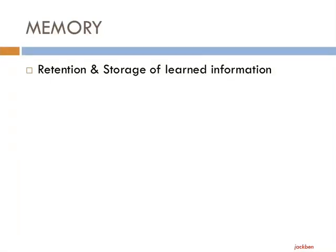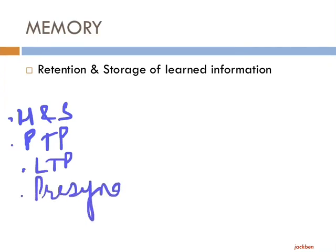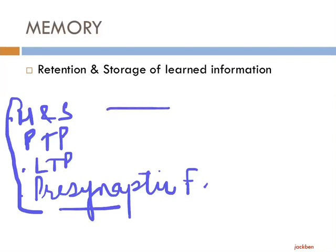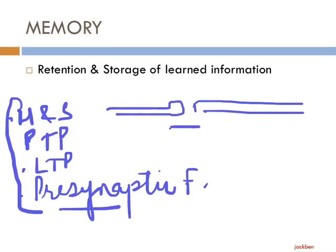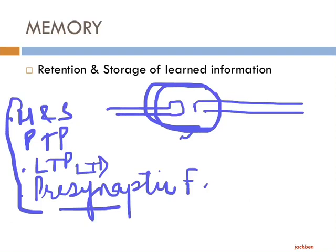In the previous sections we discussed different mechanisms of acquiring new information: habituation and sensitization, post-tetanic potentiation, long-term potentiation, and pre-synaptic facilitation. What is common between all these different mechanisms? There is a pre-synaptic neuron and a post-synaptic neuron, and the change was in the synaptic transmission between these two neurons — either facilitated or inhibited, increased or decreased.